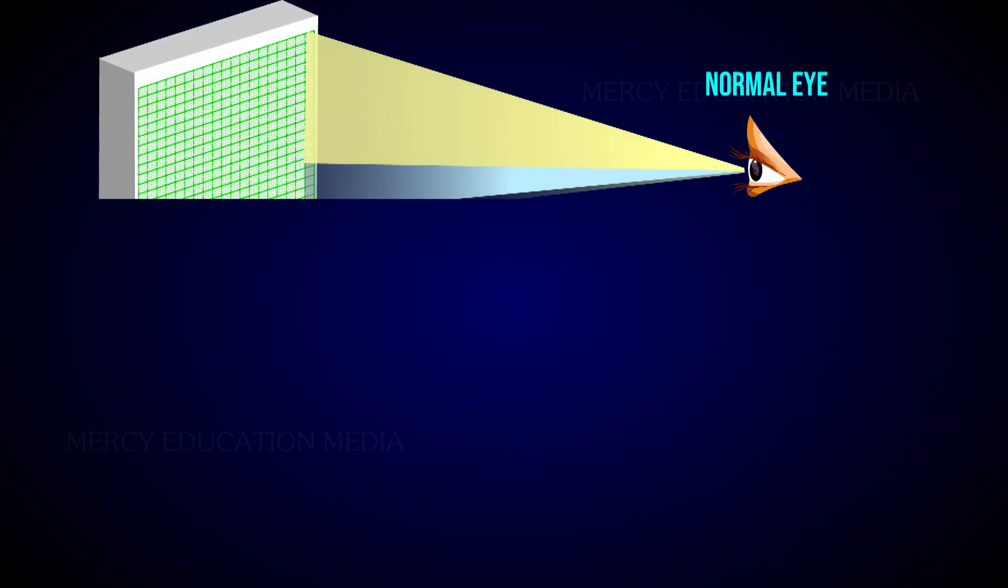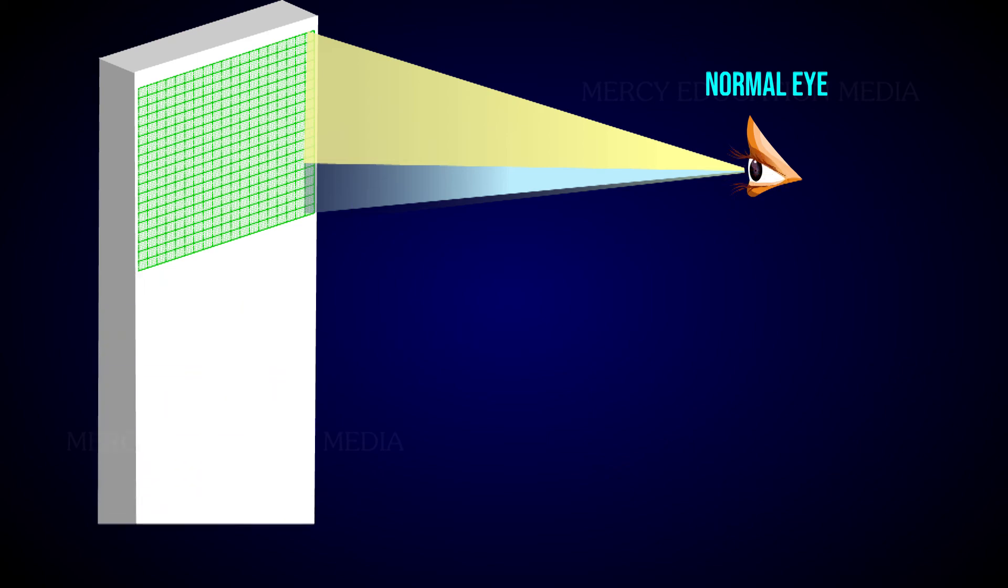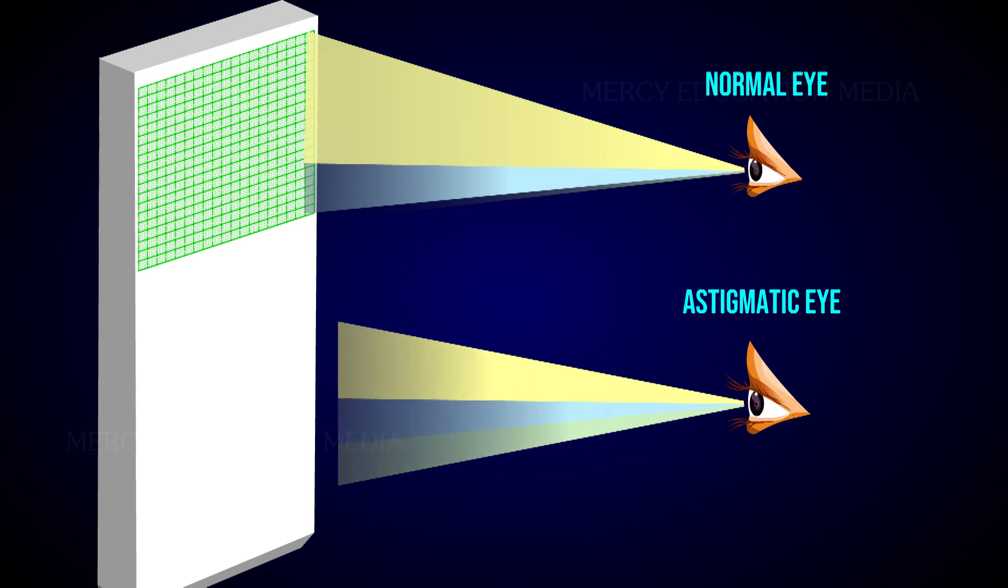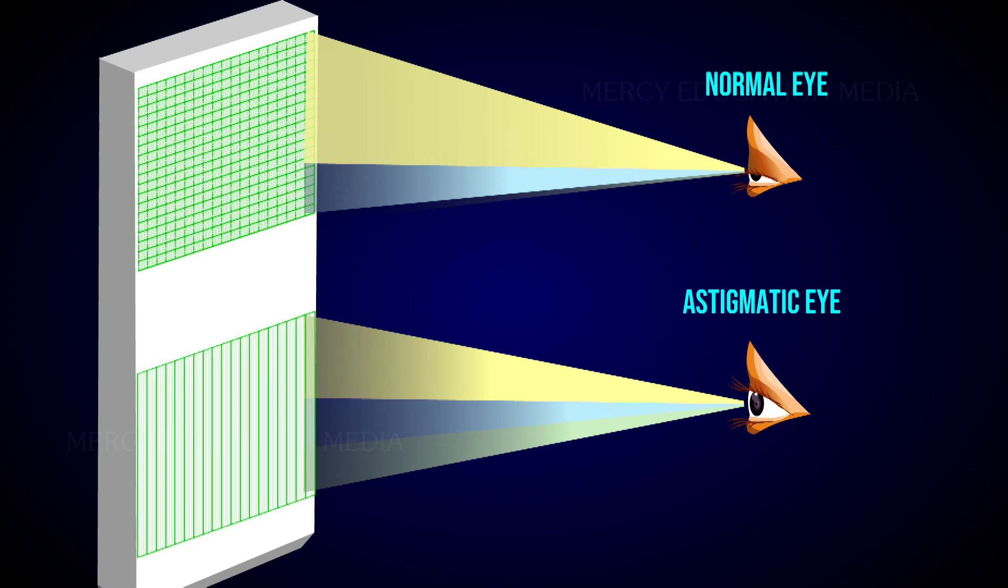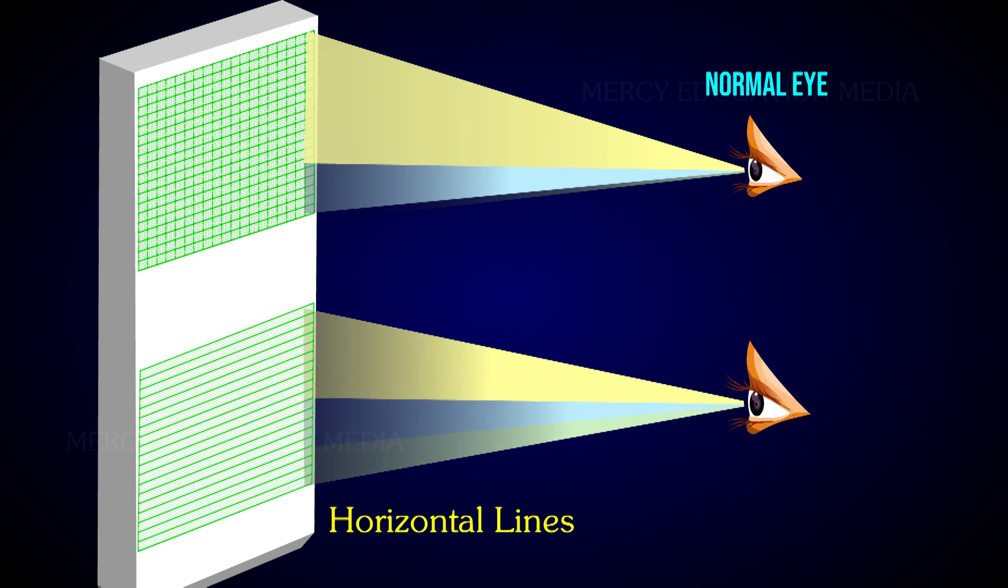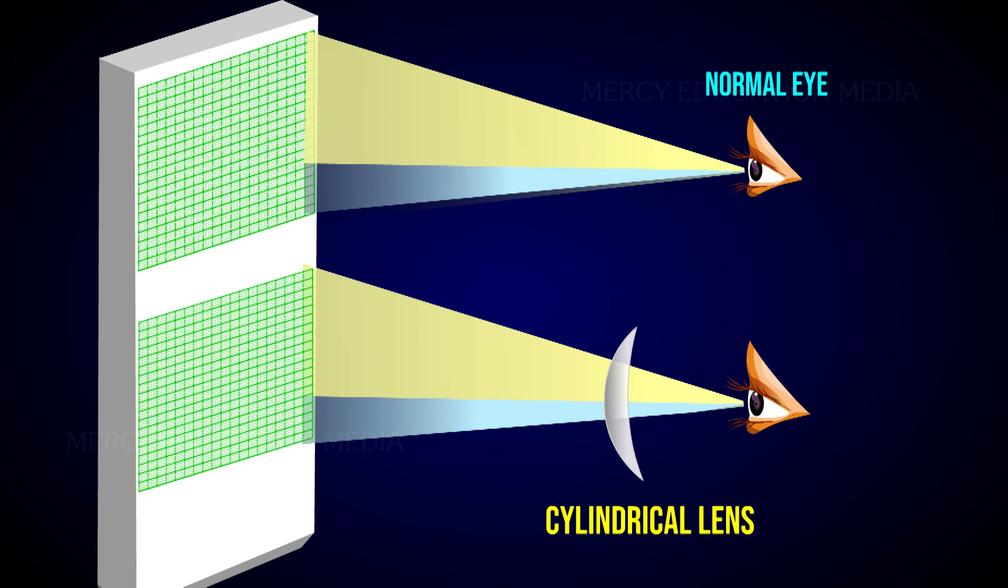You can see here how the lines on a graph paper appear to a normal eye and an astigmatic eye. An astigmatic eye cannot simultaneously focus all the objects or lines, that is, an astigmatic eye may see only vertical lines or horizontal lines on a graph paper. This can be corrected by using a cylindrical lens.